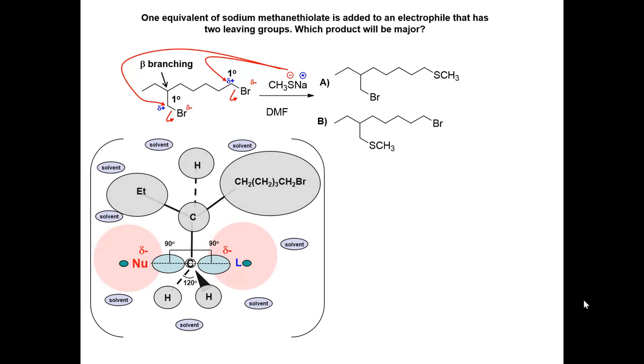Even when you draw an arrow to the electrophilic center that has beta branching, you sense the more tortured pathway and how steric crowding in the transition state would raise the activation energy and slow this reaction down.